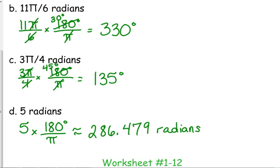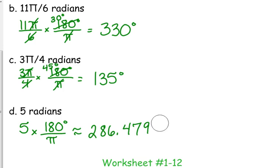Technically you don't have to write the word 'radians' — if you don't write anything it is assumed you're talking about radians. I'm going to be very picky on quizzes and tests: if you leave the degree symbol off when the answer is in degrees, I will count off, because without the degree symbol it's assumed to be radians. So you don't have to write anything for radians, but you must include the degree symbol when the answer is in degrees.